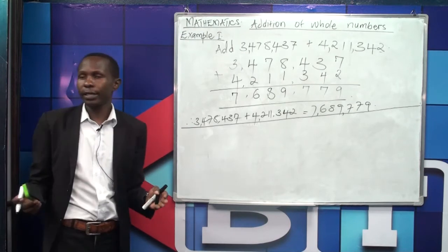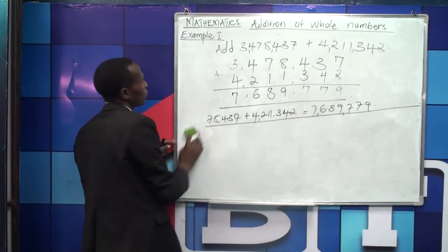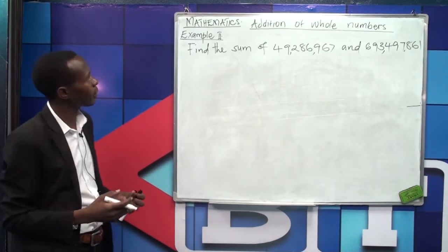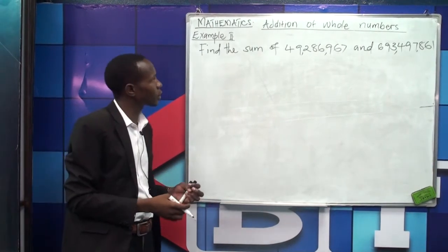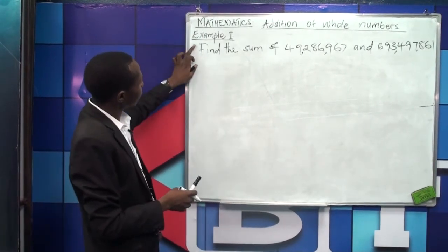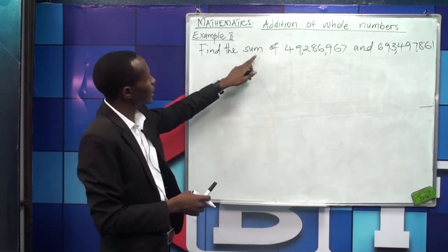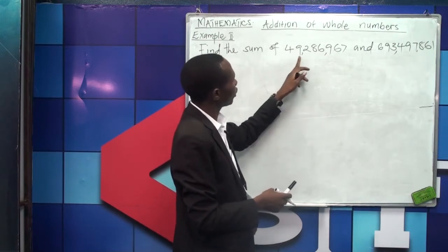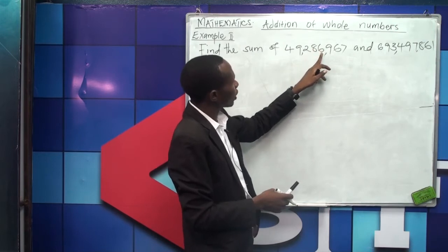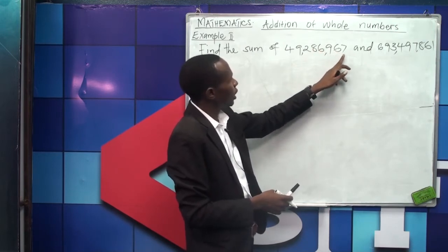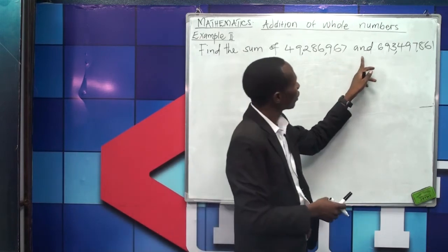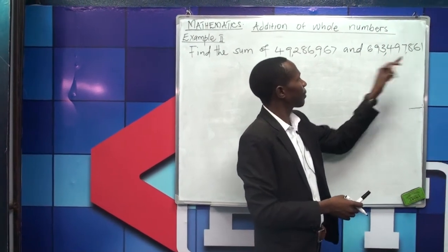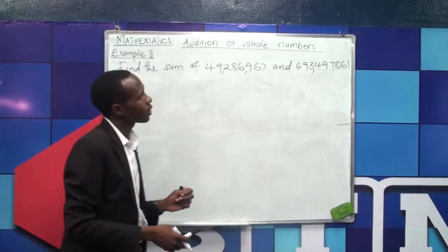Let's continue with our second example. What does the second example say? Find the sum of 49,286,967 and 693,497,861.